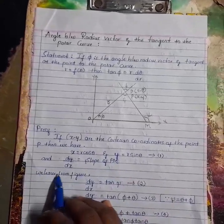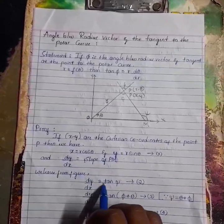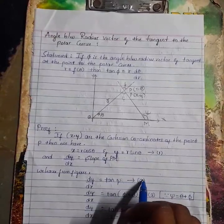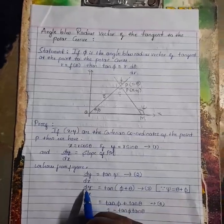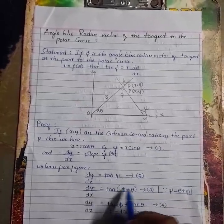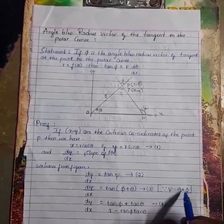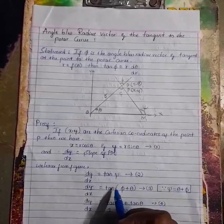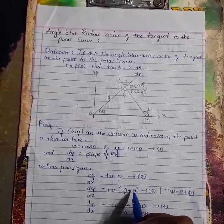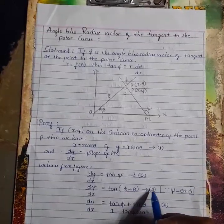From the figure, dy/dx = tan ψ. This is equation number two. Since ψ = θ + φ, we have dy/dx = tan(φ + θ). This is equation number three.